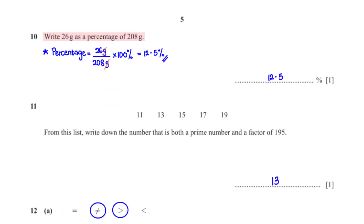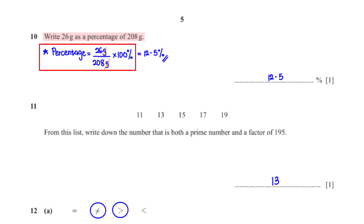Write 26 grams as a percentage of 208 grams. When we set up the percentage equation, the value after the 'of', in this case 208 grams, would be the denominator. So we have 26 grams divided by 208 grams times 100%, which is equal to 12.5%.